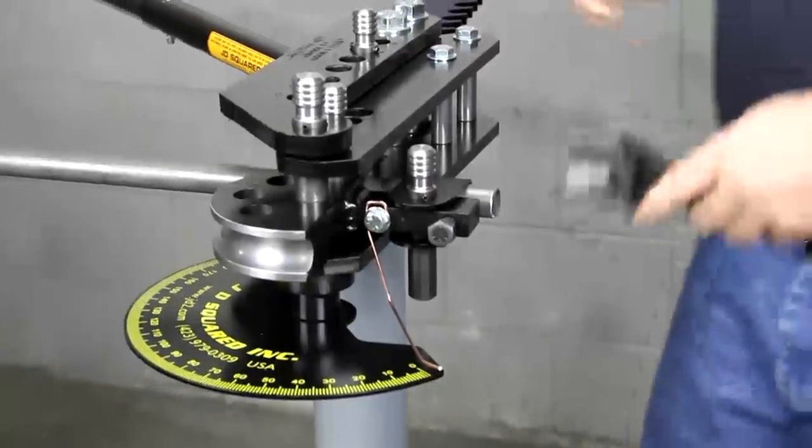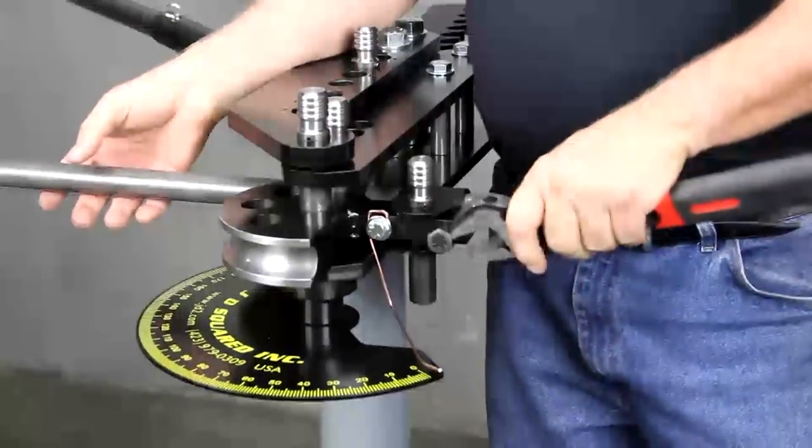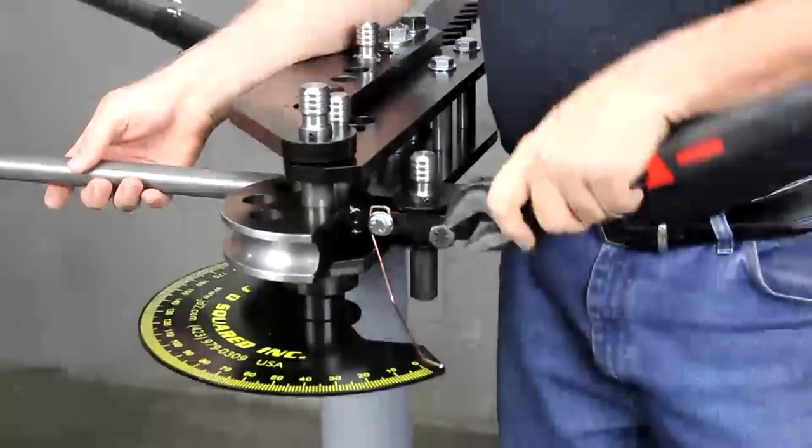Now what we're bending right here is actually our number one selling die. Very easy stuff to bend. It's one inch tubing.